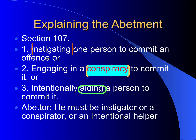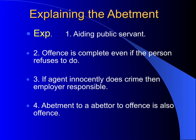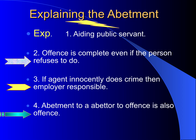By a closer look, it indicates the abettor is not the person who actually commits the offence, but he is the person who wishes the commission of the offence. For that, he does everything from his side, and thereby he becomes the abettor. An explanation is given under the section: firstly, aiding a public servant, and secondly, an offence is complete even if the person abetted refuses to do it.